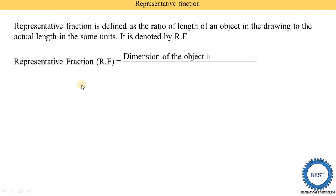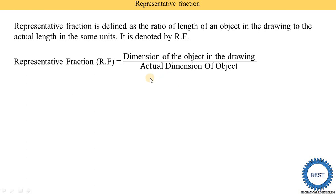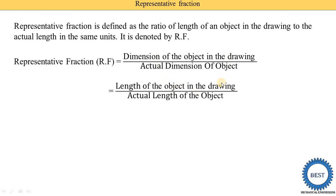We convert this definition into the form of an equation. RF is equal to the dimension of the object in the drawing divided by the actual dimension of the object. We can also write this as the length of the object in the drawing divided by the actual length of the object. Using these equations, we are able to find out the representative fraction.